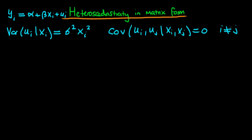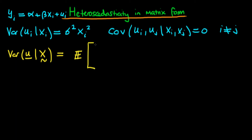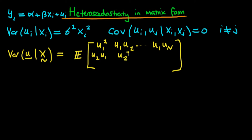How can we represent this in matrix form? In the last video, when we talked about representing homoscedasticity in matrix form, we wrote that the variance of our random vector u given our matrix of independent variables X was equal to the expectation of the matrix whose components were: u1 squared, u1 times u2, through u1 times un in the first row; u2 times u1, u2 squared, etc. in subsequent rows; with un squared as the last diagonal component — all conditional on X.